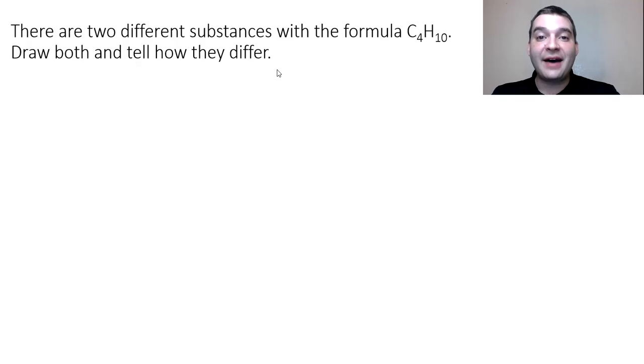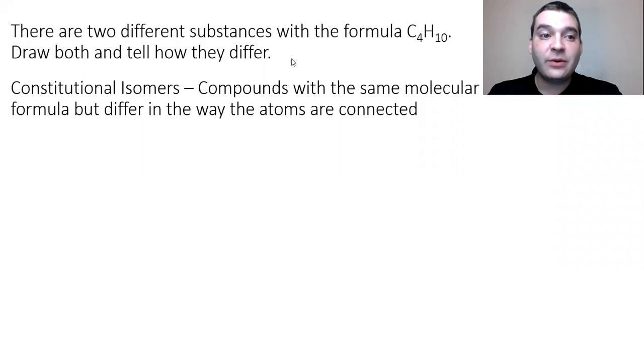Well whenever we have a molecular formula that has different structures, that is going to be constitutional isomers—compounds with the same molecular formula but differ in the way that the atoms are connected. And whenever we have a formula that is of CnH2n plus 2, I know that that's going to be a saturated alkane. Saturated meaning that there are no rings and we have no double bonds.